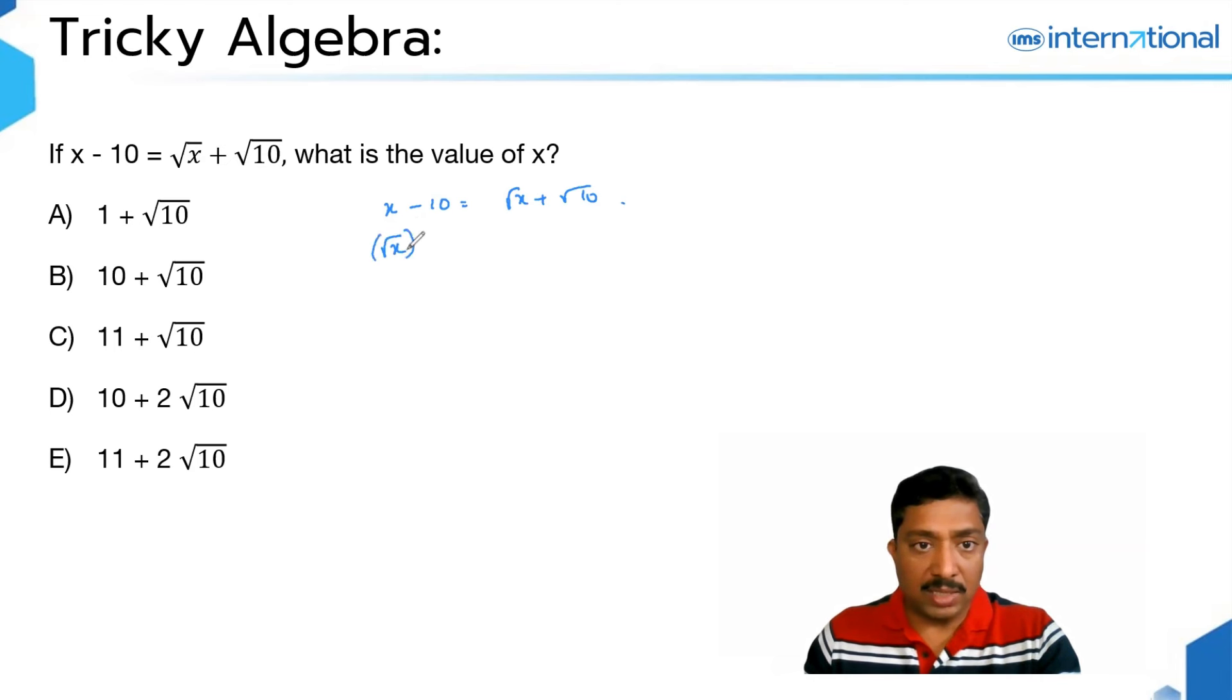I write this X as root X whole square, and then I even express this 10 in terms of root as what you see in the right-hand side. So root 10 whole square, and you have root X plus root 10, which is all the same equation as above.